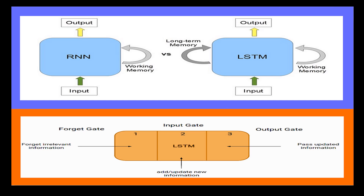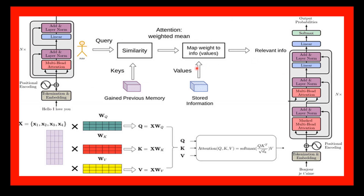Now let's understand transformers. Transformers are a type of neural network architecture introduced in 2017, and are particularly effective for processing sequential data such as natural language. They are used for a wide range of tasks including language translation, text summarization, and question answering.